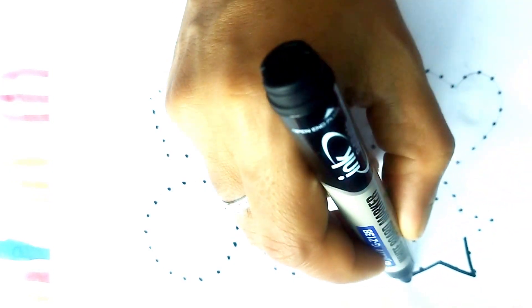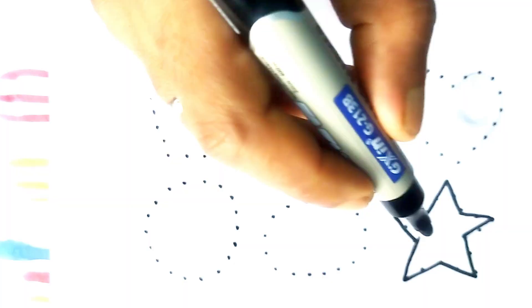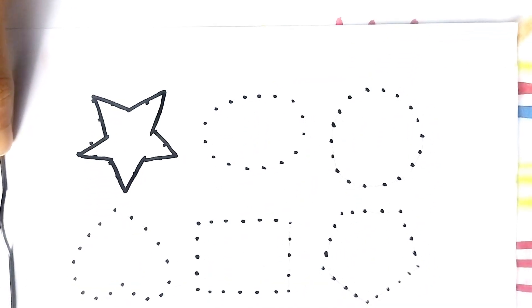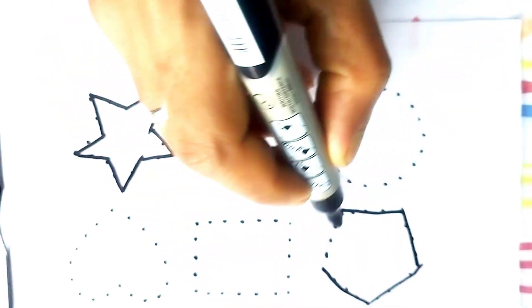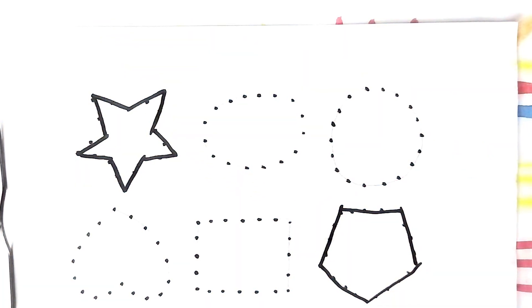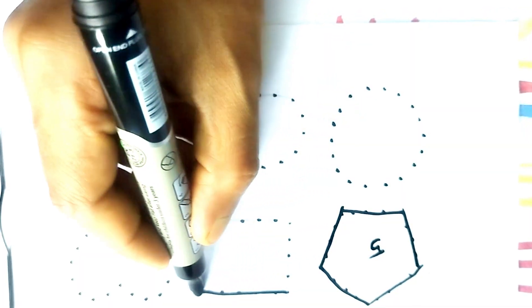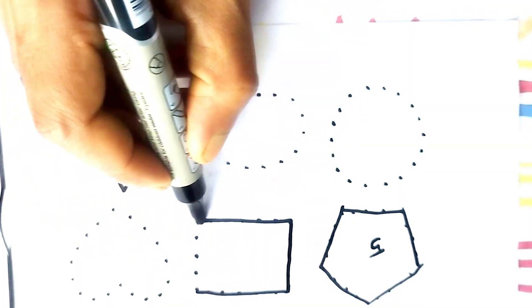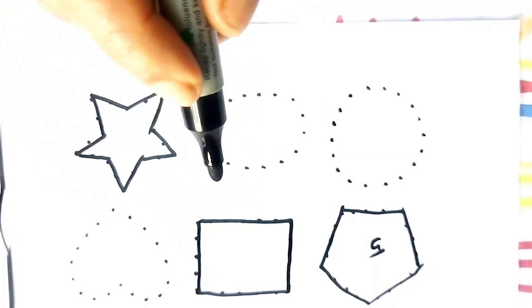Let's learn: one, two, three, four, five, six, seven, eight, nine, ten. This is a star — one, two, three, four, five. This is a pentagon — one, two, three, four. This is a rectangle.